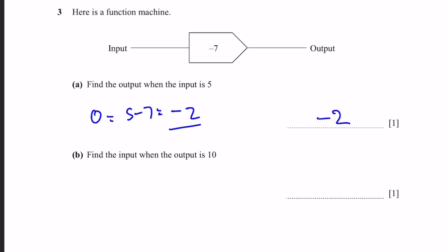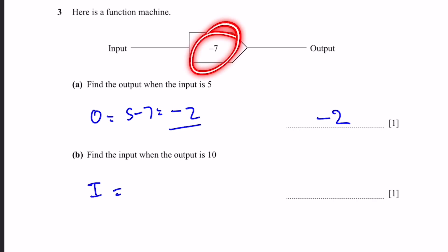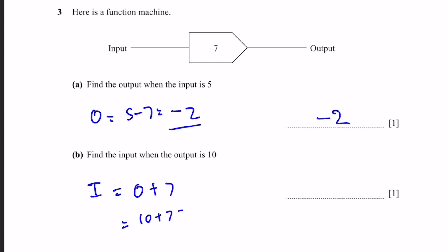Part B. Find the input when the output is 10. The input is found by reversing the operation of minus 7, which is plus 7. So the input equals 10 plus 7, which is 17.